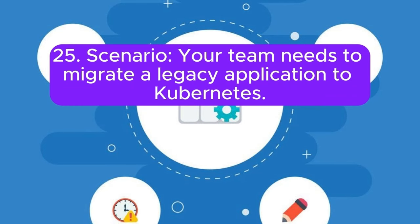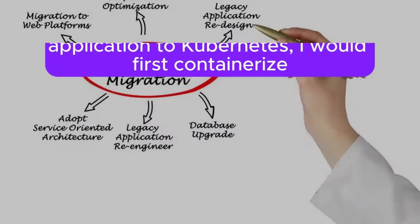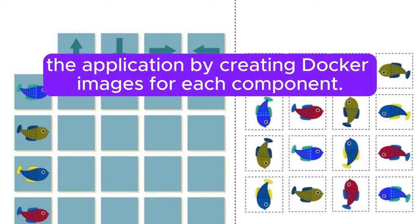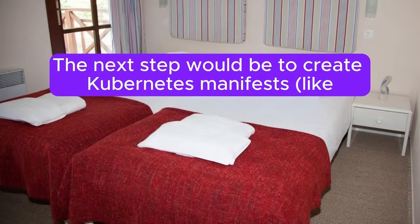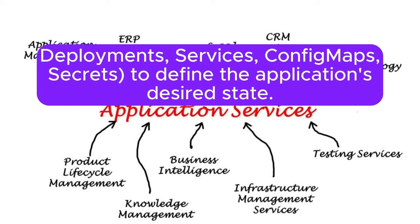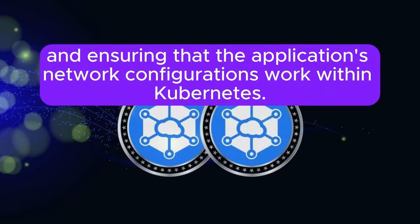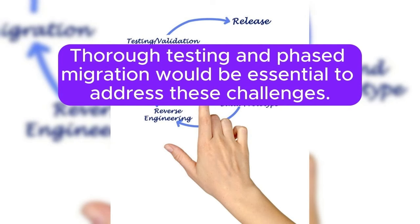Scenario 25: Your team needs to migrate a legacy application to Kubernetes. How would you handle the migration and what challenges might you face? Answer: To migrate a legacy application to Kubernetes, I would first containerize the application by creating Docker images for each component. I would analyze the application dependencies and configurations to ensure they are compatible with the containerized environment. The next step would be to create Kubernetes manifests like deployments, services, config maps, and secrets to define the application's desired state. Challenges might include handling stateful components, refactoring code to be cloud-native, managing persistent storage, and ensuring network configurations work within Kubernetes. Thorough testing and phased migration would be essential.